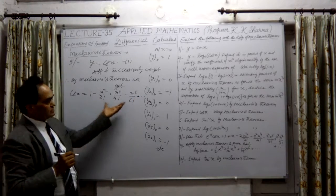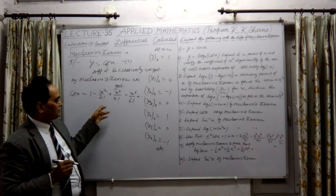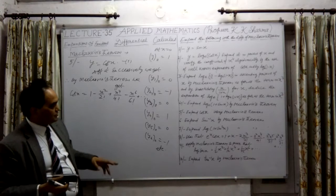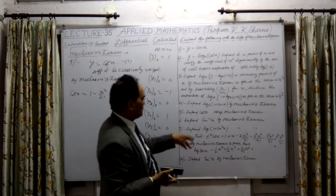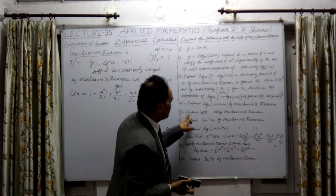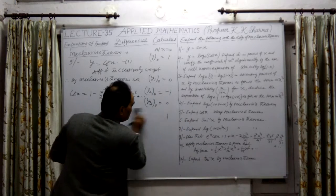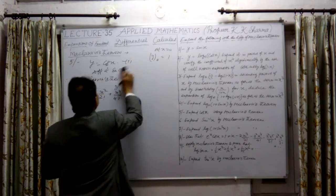Okay, so this is Maclaurin's series — we know this. Maclaurin's series is obtained by successive differentiation. Question number 5 we have done. Now the 6th one. Let me find out what is the 6th question.